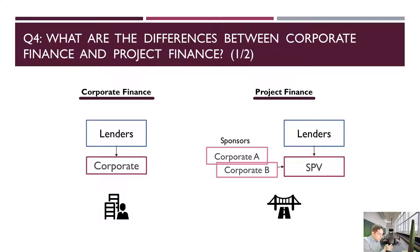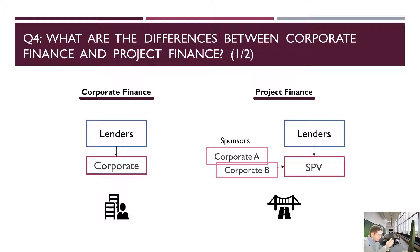In project finance, the borrowing entity is not a company that has a credit history. As discussed in previous lectures, the borrowing entity is a newly created structure — you can call it an SPV, special purpose vehicle, or special purpose entity, or special purpose company. That's the legal entity created for the purpose of the project, and that's the entity the lenders are lending money to. So unlike corporate finance, in project finance they are lending to a corporation that was created recently — that's brand new.